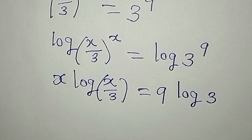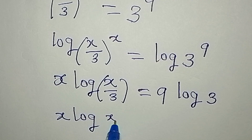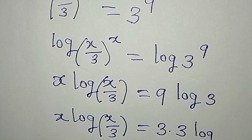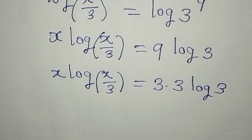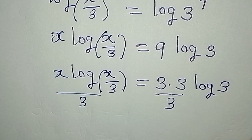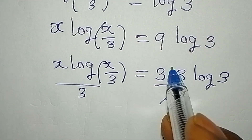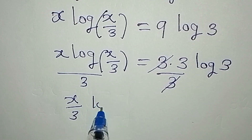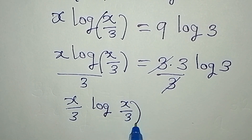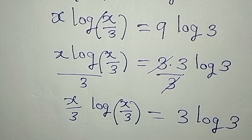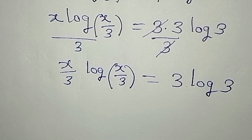Now I can break 9 into 3 times 3, so we have x · log(x/3) equals 3 × 3 × log 3. I can divide both sides by 3, so x over 3 multiplied by log(x/3) equals 3 · log 3.